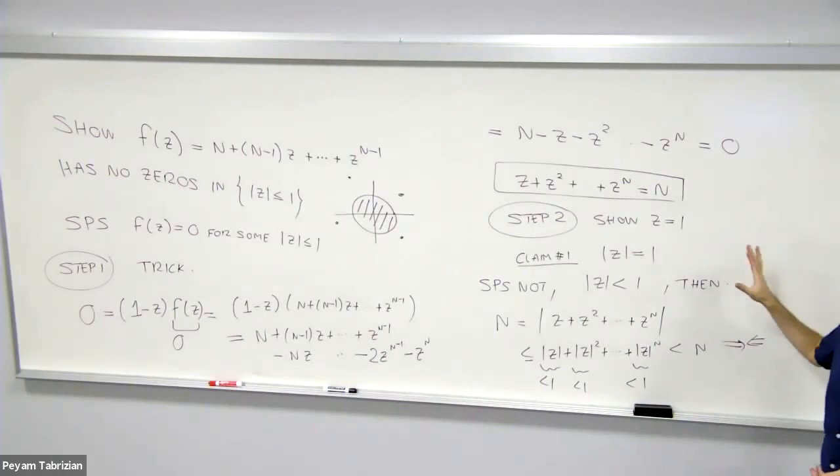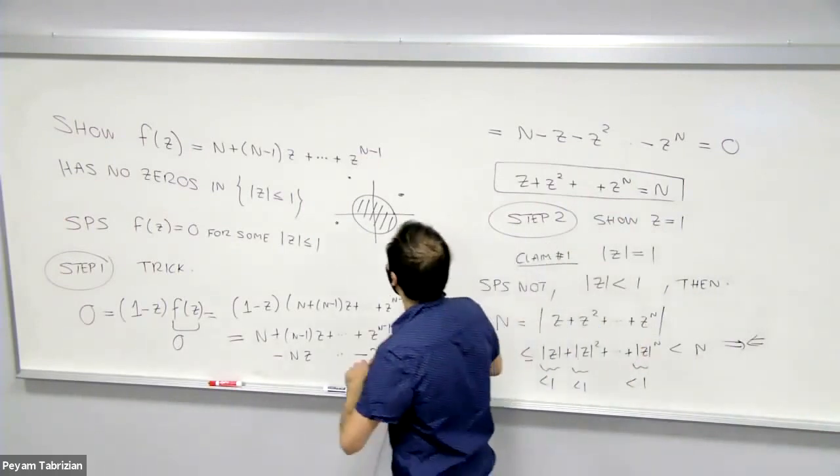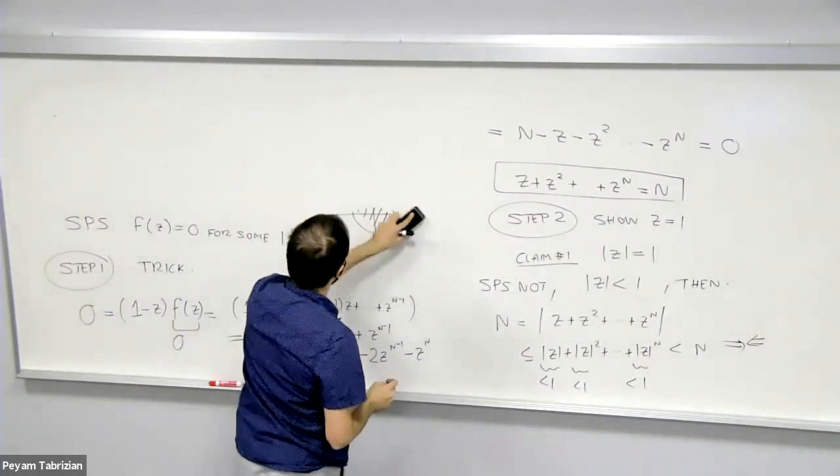All right. So definitely what we have is that z must be on the unit circle. And actually, I want to show that this implies it must be one. And why is that?